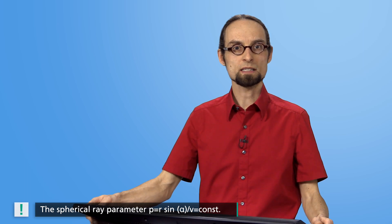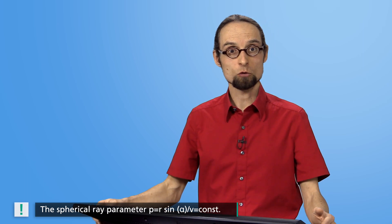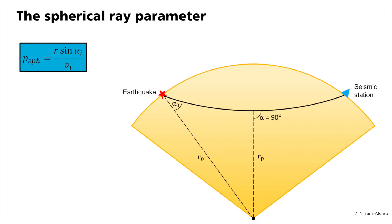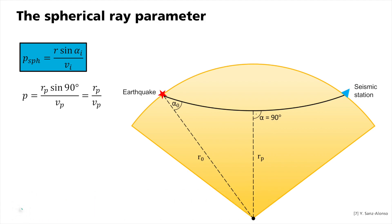The unit of p in the spherical earth is therefore one of time, or rather time per radian, such as second per degree. However, the constancy of p over the entire path does not change at all. At the vertex of a ray, the angle beta equals 90 degrees and the sin is therefore 1. Here, we define the following: r equals rp and v equals vp. The ratio between radius and velocity at the vertex can now easily be determined with measurements of the propagation velocity on the earth's surface, the angle of emergence of the ray alpha zero and the earth's radius r0. This relationship is called Benndorf's relationship.